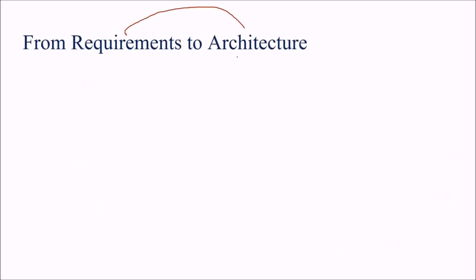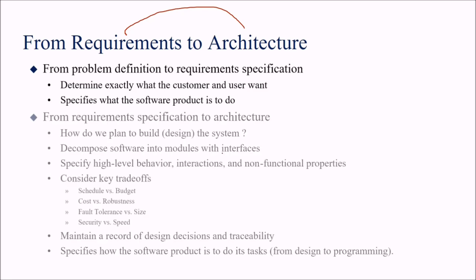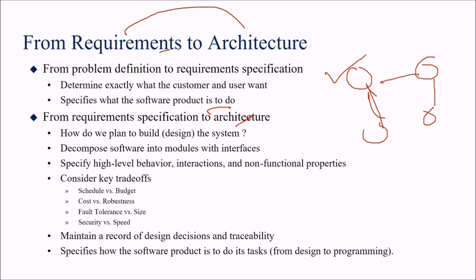How do we go from requirements to architecture? From problem definition to requirement specification, we determine exactly what the customer and user expects. From requirement specification to architecture, we decompose software into modules with interfaces, specify high-level behavior, interactions, and non-functional properties. We consider trade-offs: schedule versus budget, cost versus robustness, fault-tolerance versus size, and security versus speed. We also maintain a record of design decisions with traceability to requirements.